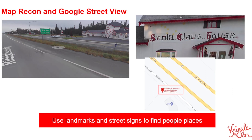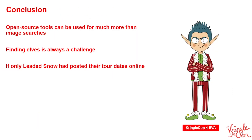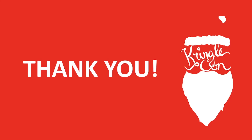In summary, open source tools are very useful to find things on the web and on the internet, in addition to image searches. But finding elves is always a challenge, as they are always out there handing out bits to everyone. Only if Let It Snow had posted their tour dates online, this might have been a little bit easier. I appreciate you coming to my KringleCon 4 talk. Just remember, open source tools are good, but there are some ways that you can protect yourself, as we've talked about. Thanks a lot. Hope to see you around the con. If you see me, I'm Mad-Eye. It would be great to talk to you. Take care.